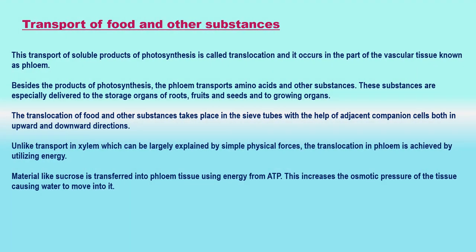Transport of food and other substances: The products of metabolic processes, particularly photosynthesis, are moved from leaves, where they are formed, to other parts of the plant. This transport of soluble products of photosynthesis is called translocation, and it occurs in the part of the vascular tissue known as phloem.